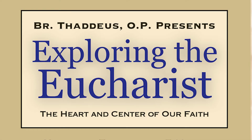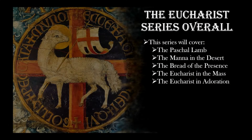As you can see on the screen, this is going to be the Eucharist series overall. We're going to be covering five topics over the span of five weeks. Tonight is going to be our first topic, the Paschal Lamb. Then we're going to talk about manna in the desert and the bread of the presence. During this section, we're really going to be focusing on prophetic symbols, which in some way foretell of the coming of the Eucharist. By having a greater understanding of these, we can deepen our knowledge of the Eucharist and our appreciation of the most blessed sacrament.